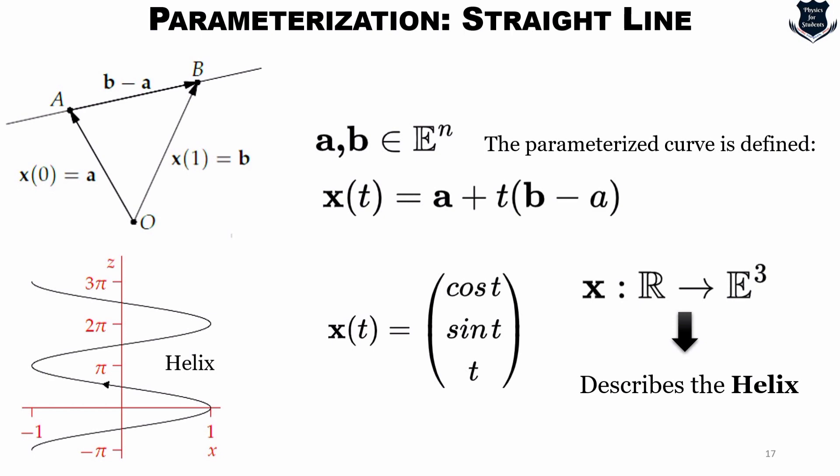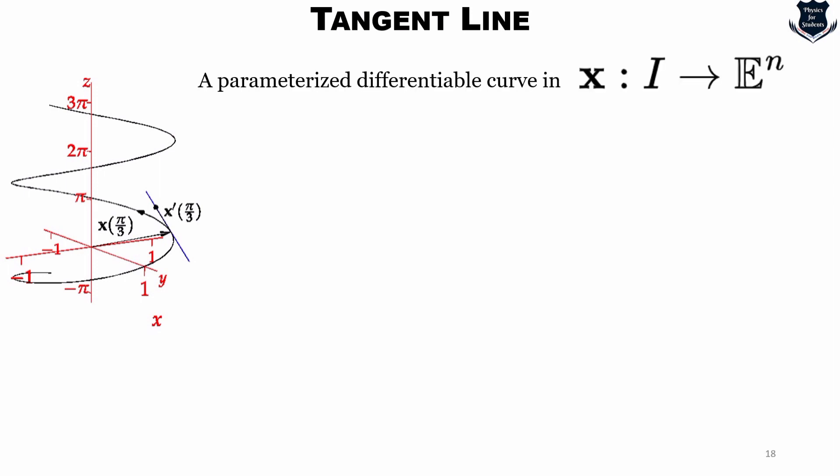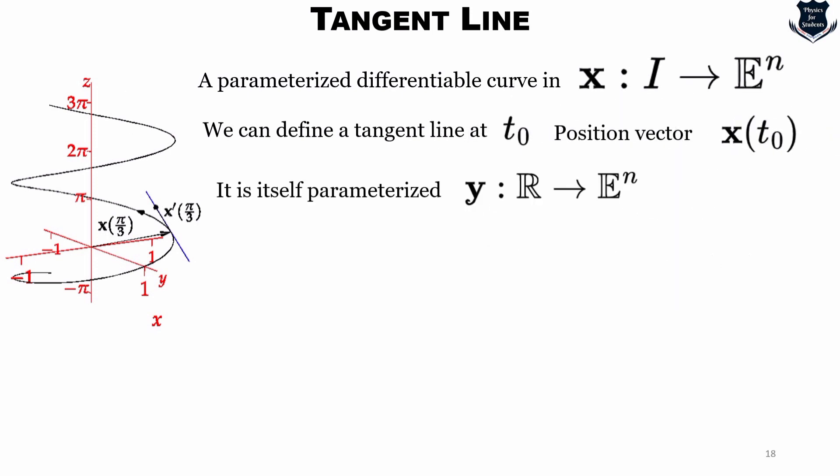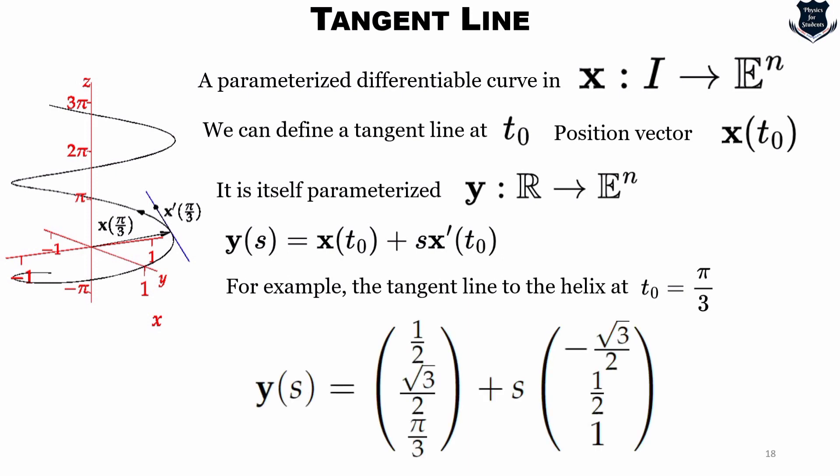But don't worry, I will be covering up more. Now here is something which I would like to show you. Now this is an example which is a tangent line, and we can say that a parameterized differential curve x which goes from I up to n, we can define a tangent line at t₀ with the position vector x(t₀), and it is itself parameterized which is this one, which leads to this. And for example, the tangent line to the helix at t₀ equals π/3 can be described as this. You can later check on the equations if you want.